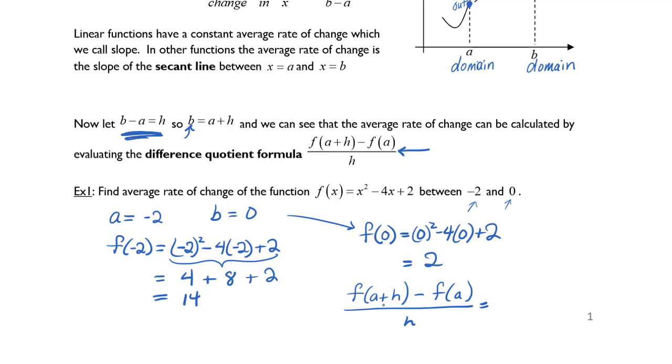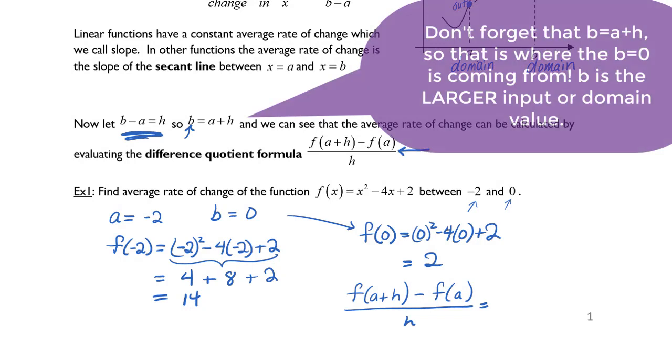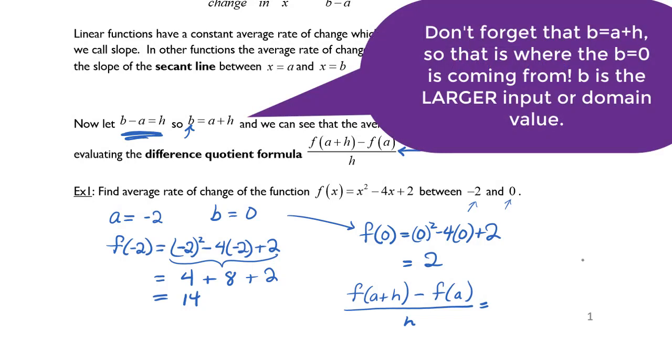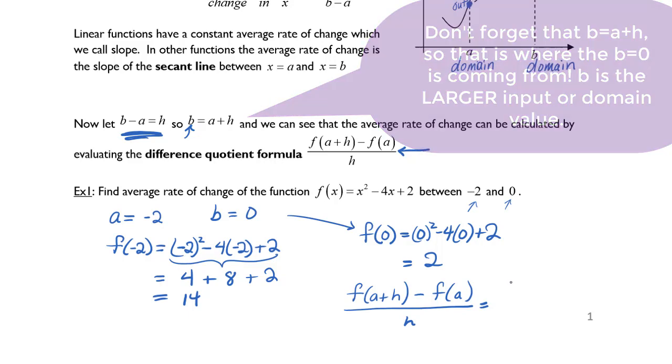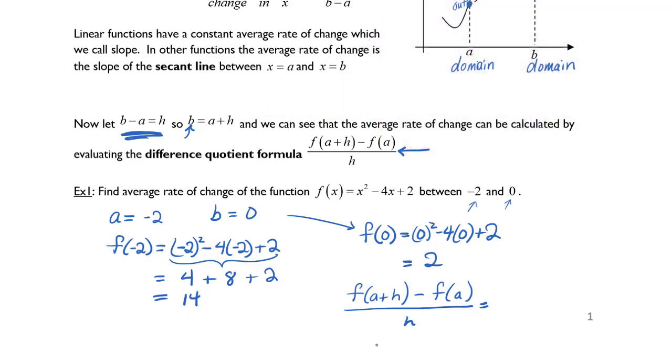We know that f of a plus h is going to be 0. That's b, f of b was f of 0. So we're going to say 2 minus 14 all over h.